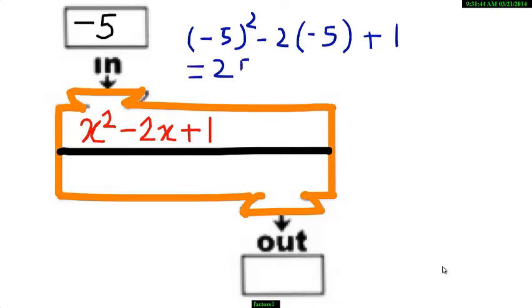This is equal to 25 plus 10. Be careful of the negative sign outside the bracket plus 1. That is equal to 36. So when minus 5 gets into the machine, it comes out as 36.